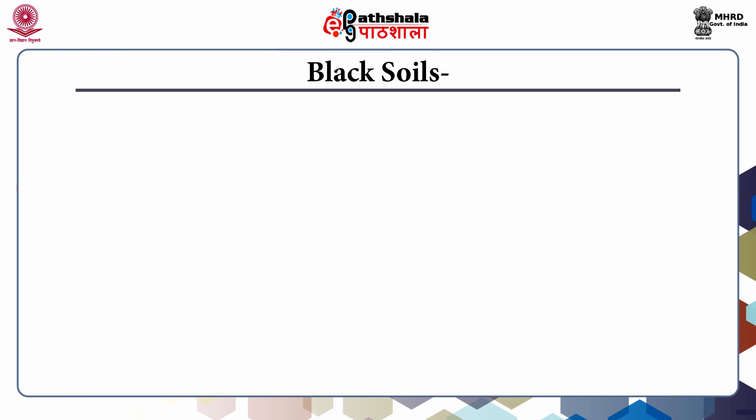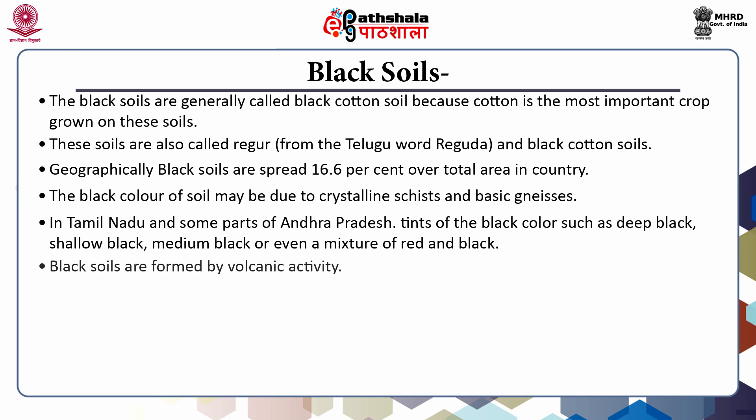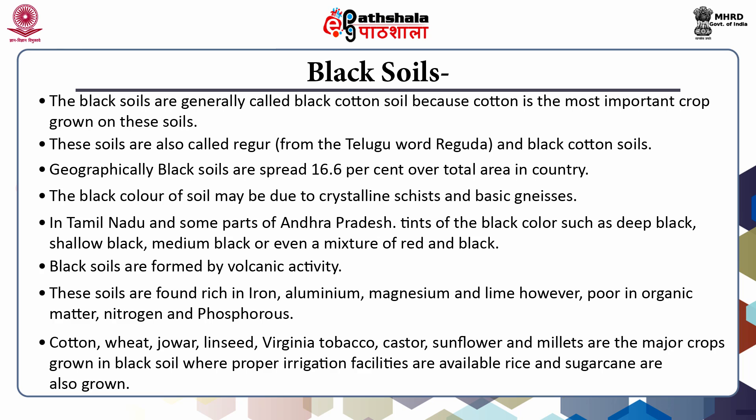Next is black soils. The black soils are also called regur and black cotton soil because cotton is the most important crop grown on these soils. Several theories have been put forward regarding the origin of this group of soil, but most pedologists believe that these soils have been formed due to the solidification of lava spread over large areas during the volcanic activity in the Deccan plateau thousands of years ago. Most of the black soils are derived from two types of rocks: the Deccan and Rajmahal trap, and ferruginous gneiss and schist occurring in Tamil Nadu.